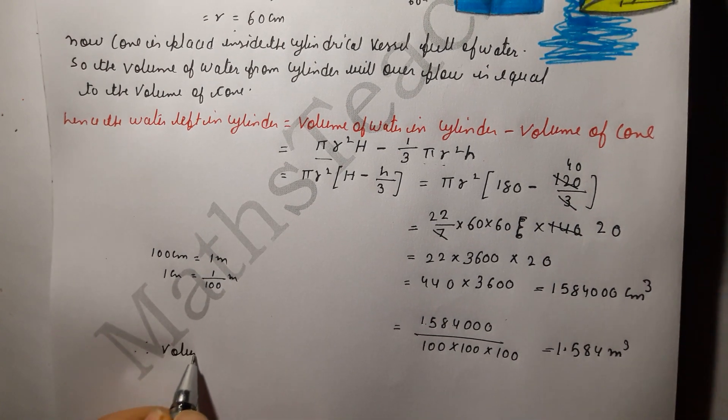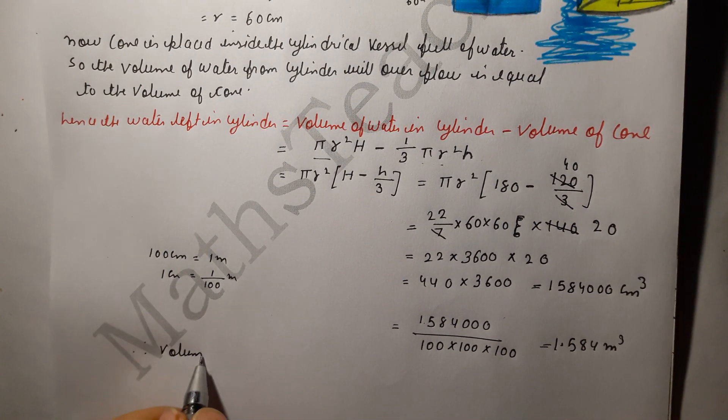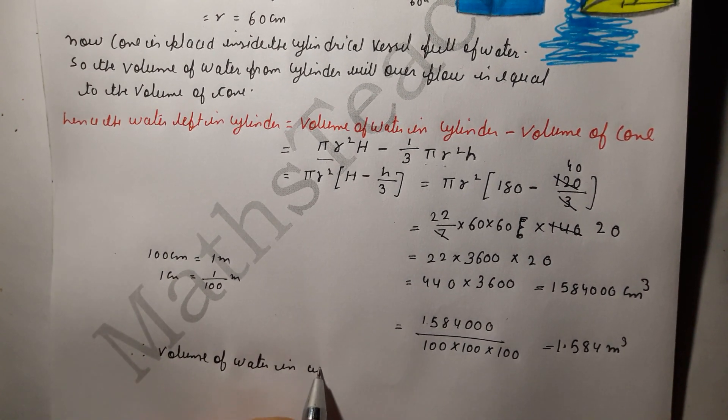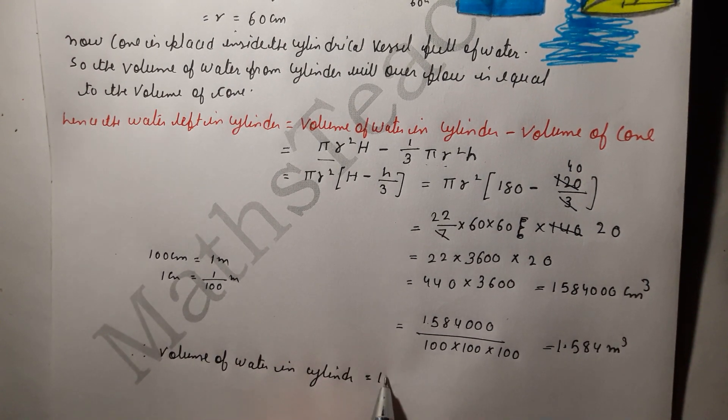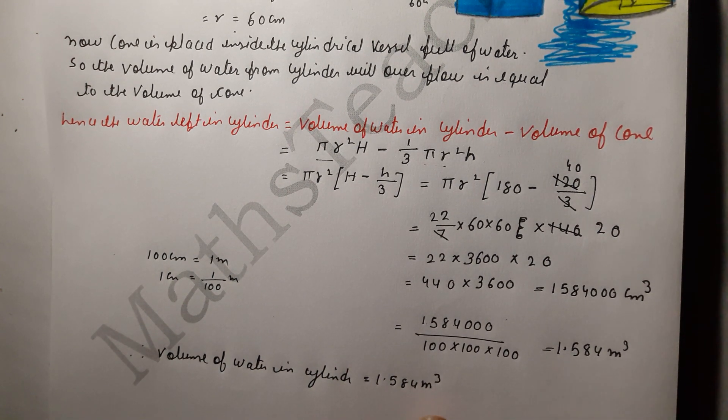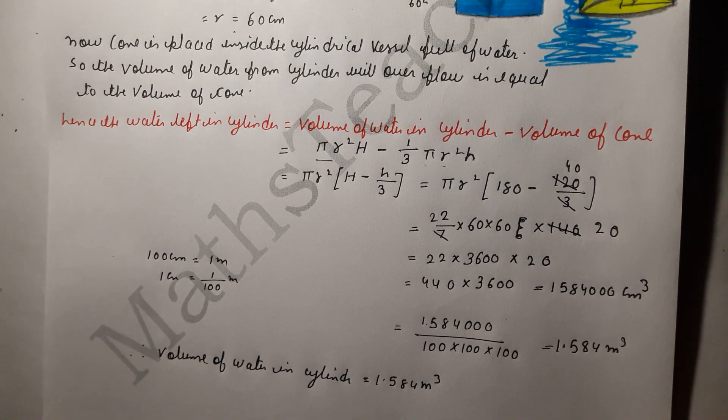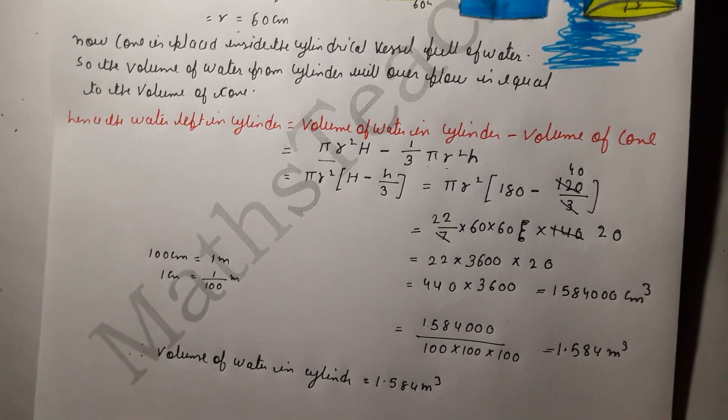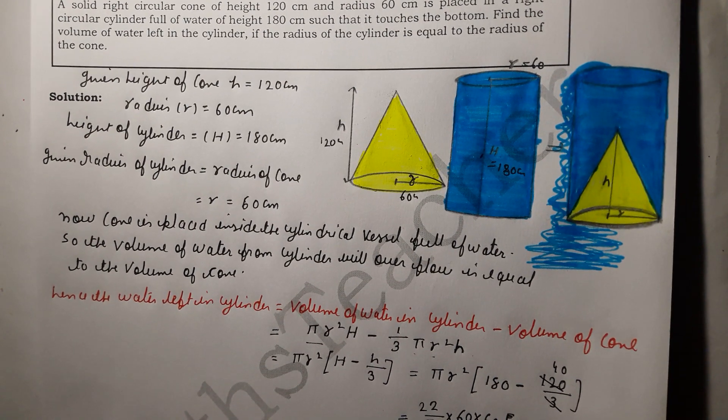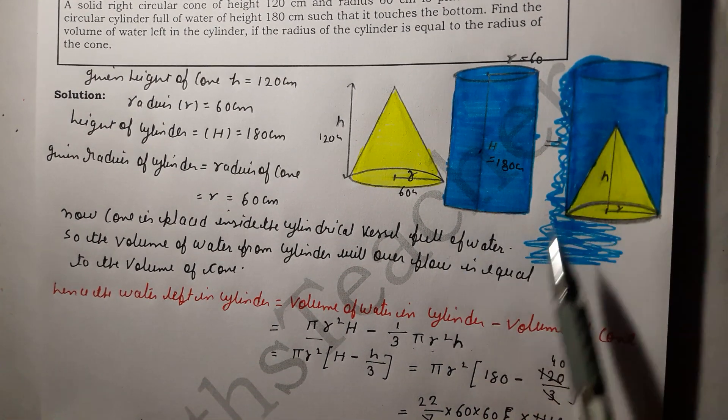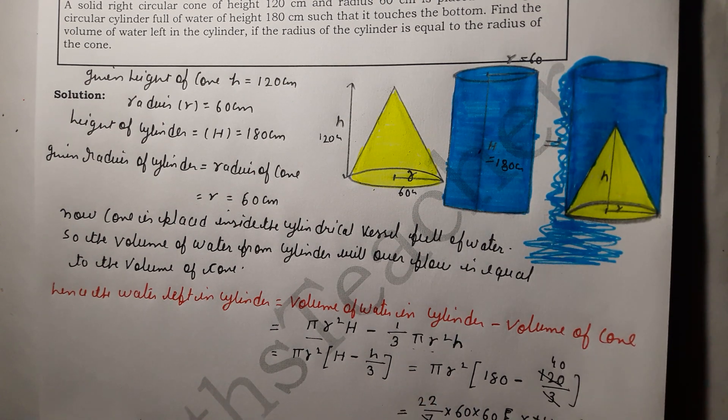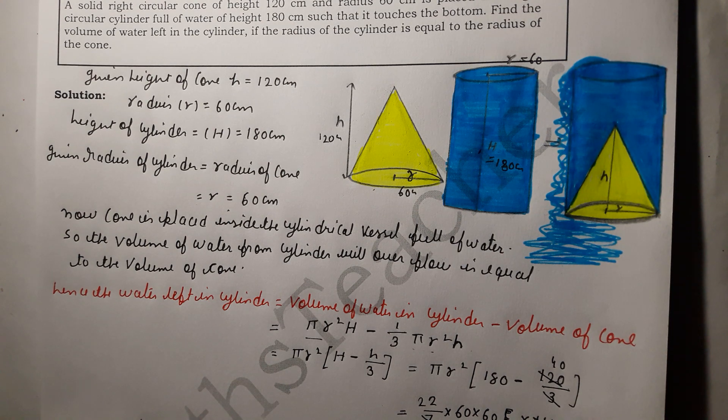Therefore volume of water left in cylinder equals 1.584 meter cube. So the required volume of water is 1.584 meter cube. Very simple question, very easy question. I hope you will understand the logic. If you have this rule of physics you will understand. So you will find real problems related like this. If you know this rule then you will solve this question. You should learn formulas. If you have any doubt please comment. Thank you.